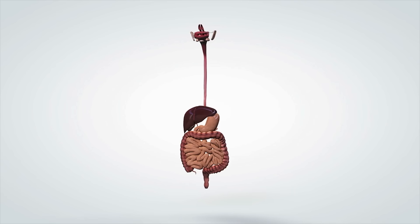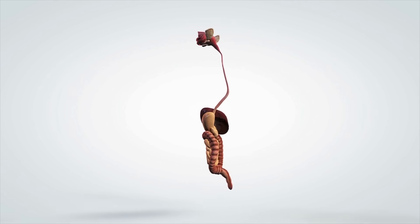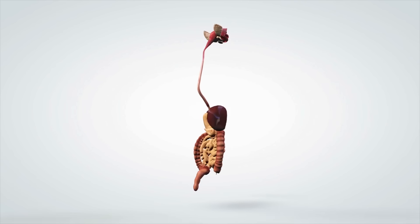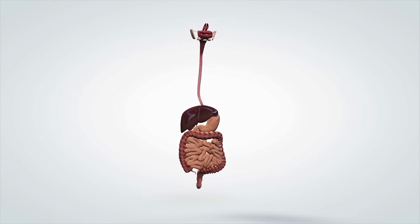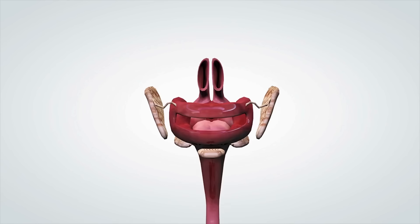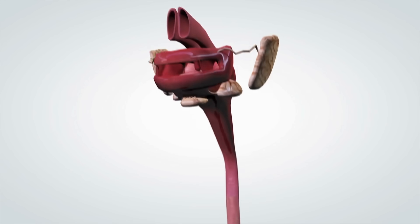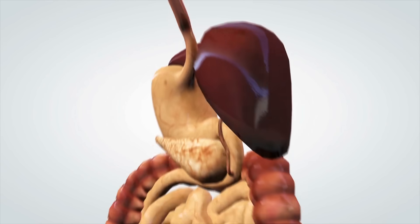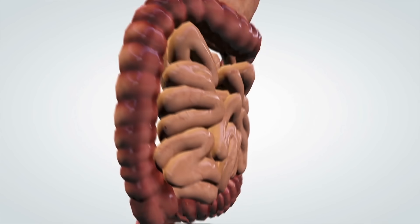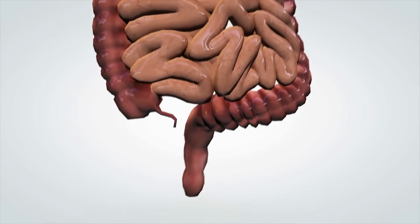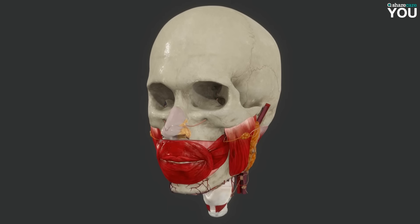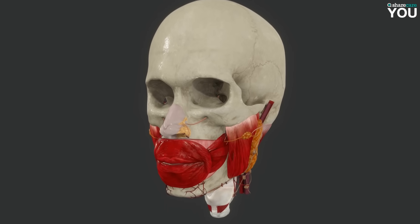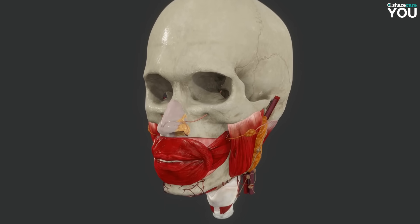But with all of this understood, it's time to get a closer look inside the digestive system, just as we've done with the heart and the brain. What do these organs really look like? What is it like to travel through sections of the GI tract? Let's start at the mouth, where chewing, or mastication, is taking place.